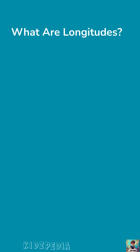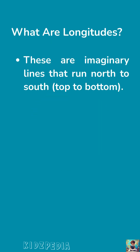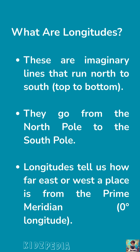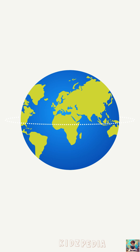Longitudes — what are longitudes? These are imaginary lines that run north to south, from top to bottom. They go from the north pole to the south pole. Longitudes tell us how far east or west a place is from the prime meridian, that is zero degree longitude. So to measure longitudes, we need a starting point called the prime meridian.